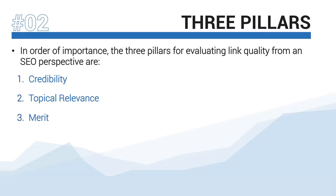In order of importance, the three pillars for evaluating link quality from an SEO perspective are: number one, credibility; number two, topical relevance; and number three, merit. The ideal SEO link will satisfy the criteria of each pillar — so it will be credible, topically relevant, and awarded based on merit. As you review each link, you'll know which questions to ask to gain an understanding of the SEO value being passed.